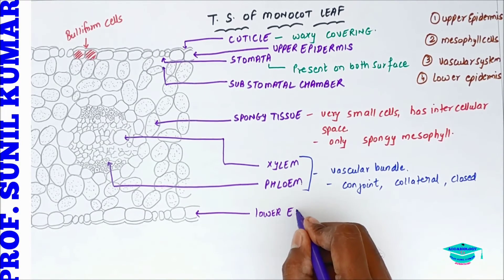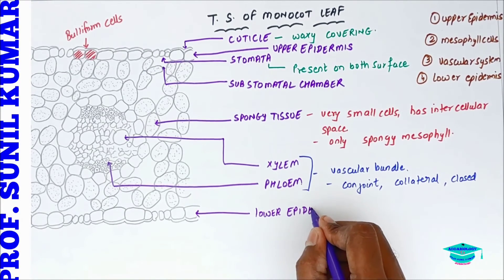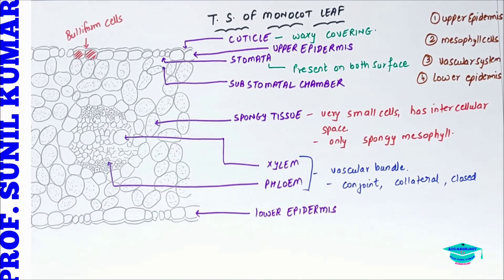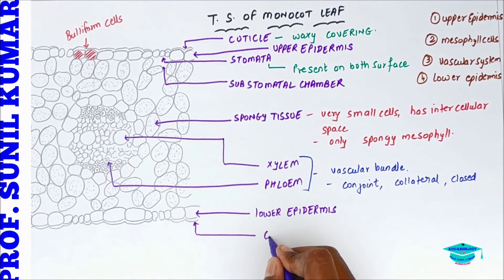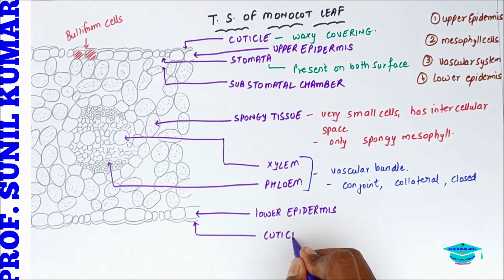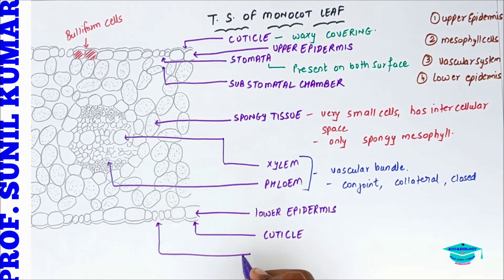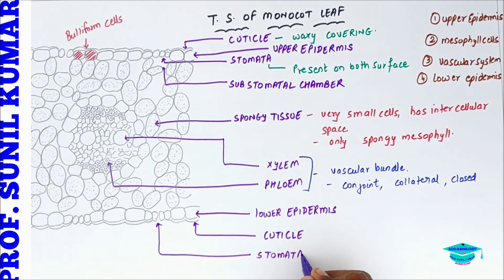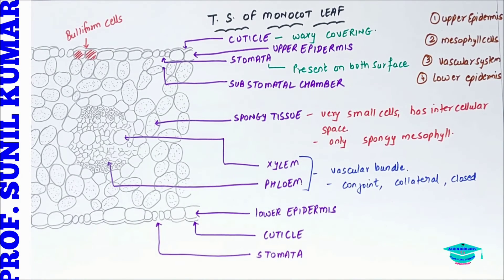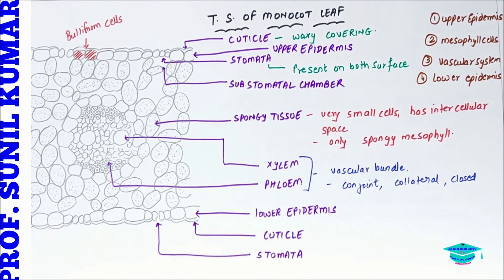This is the lower epidermis of the Monocot leaf. The lower epidermis also has a covering, which is the waxy cuticle, and it also shows the presence of stomata and stomatal openings.